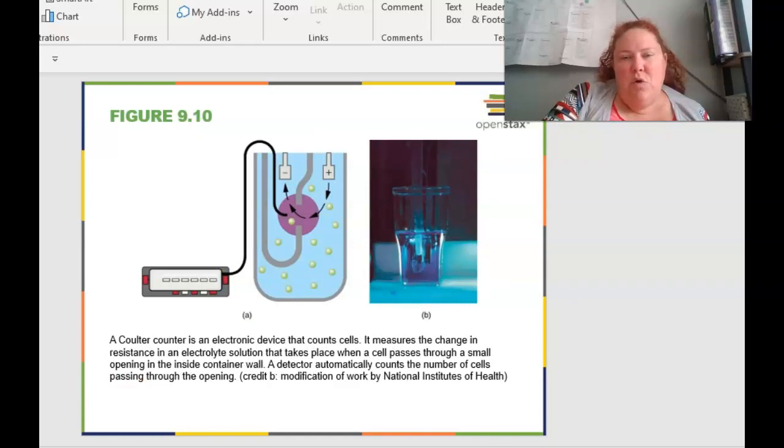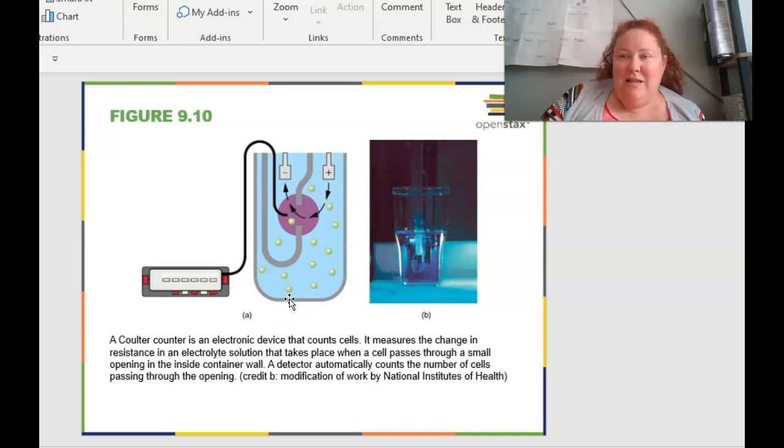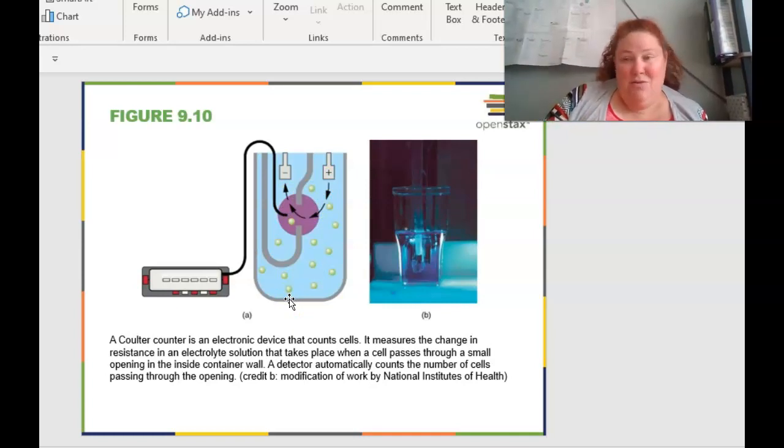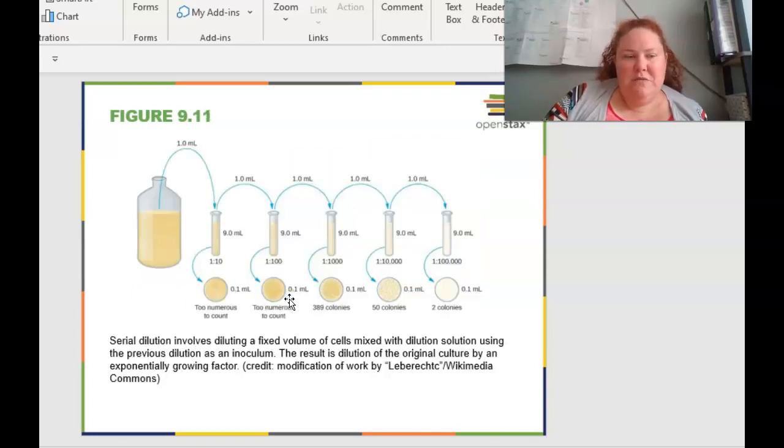Another way that you can do this more automated is using a Coulter counter. And this is an electronic device that counts the cells and it measures the change in the resistance of the electrolyte solution that takes place when the cell passes through a small opening inside the chamber. And then a detector automatically counts the number of cells that pass through the opening. Very fancy. A lot more expensive. I never got to use one of these because it was too expensive and the amount of cell culturing that we did was minimal. But still very cool.